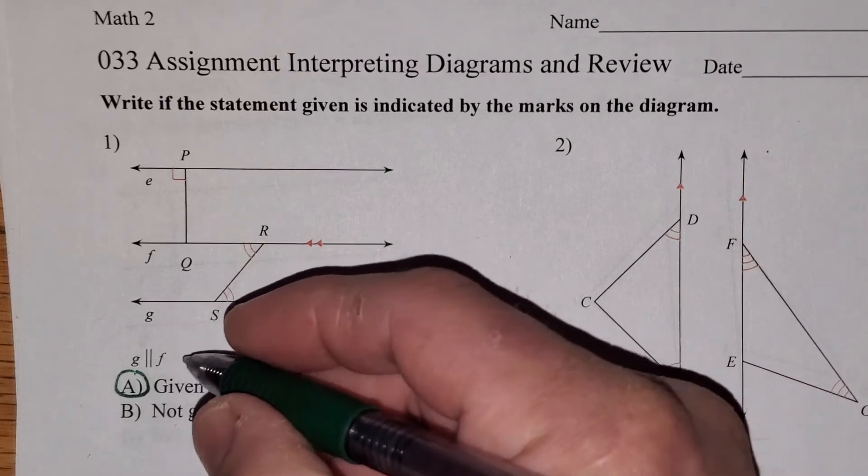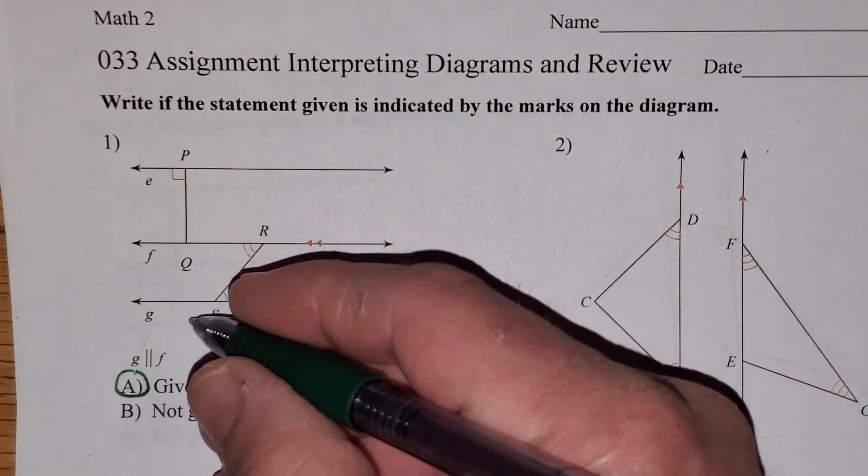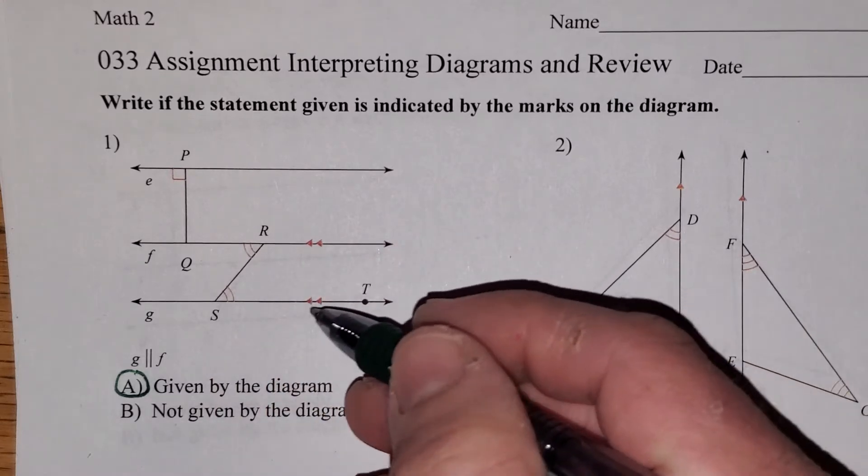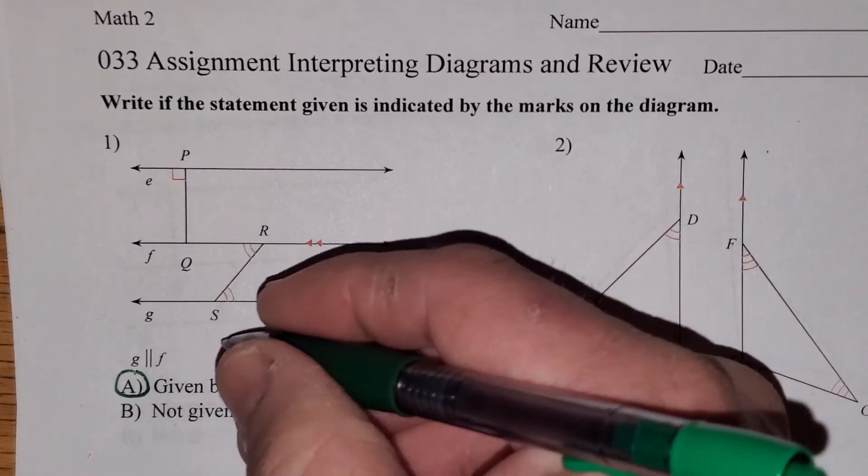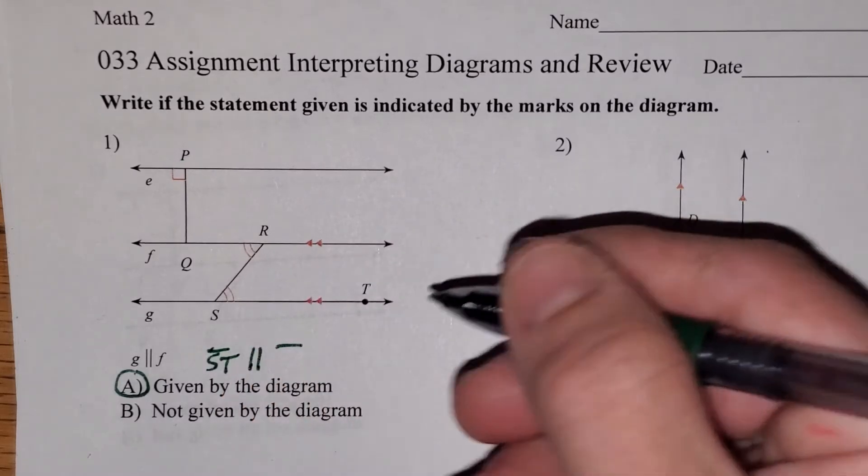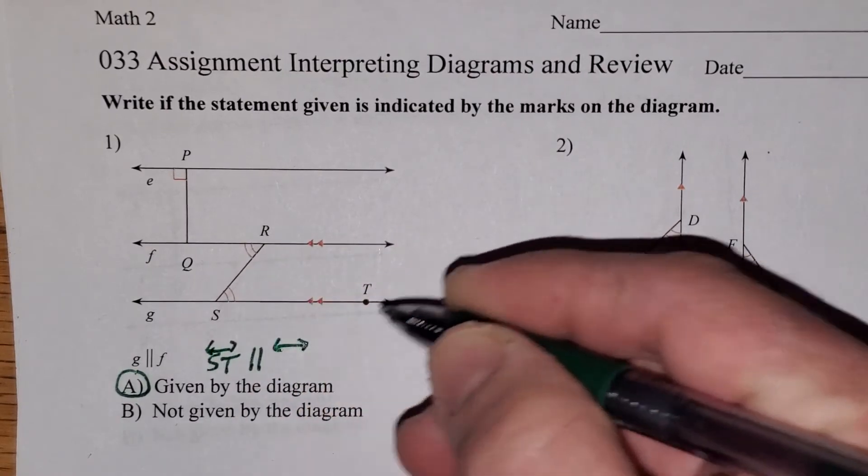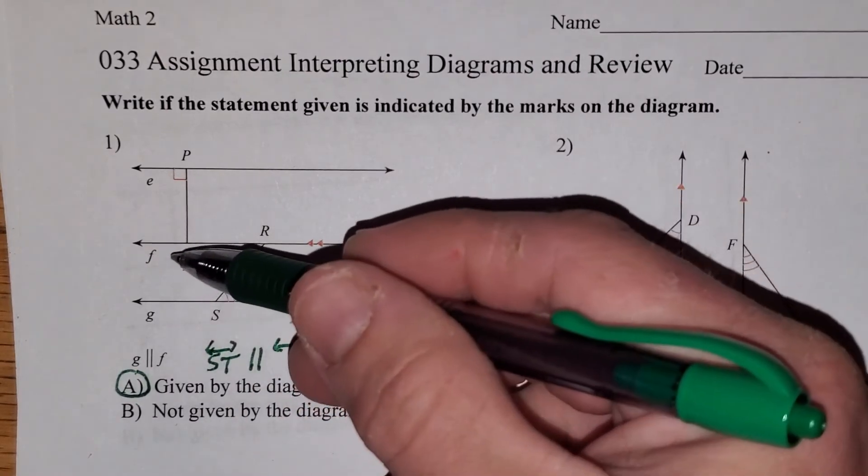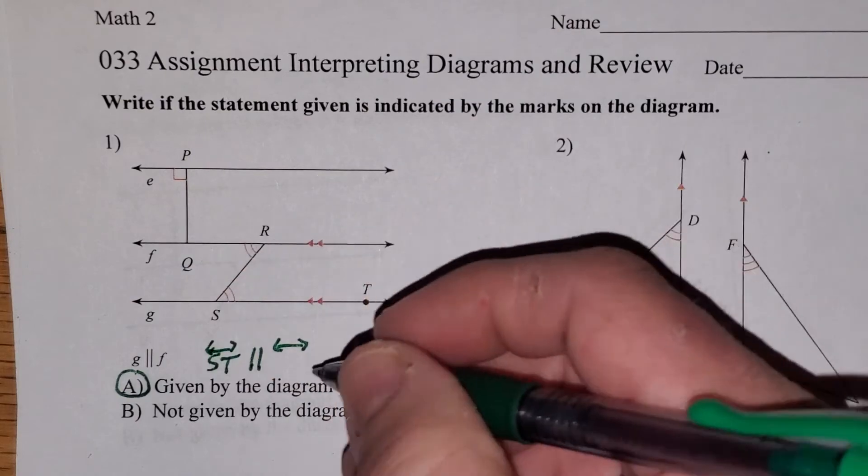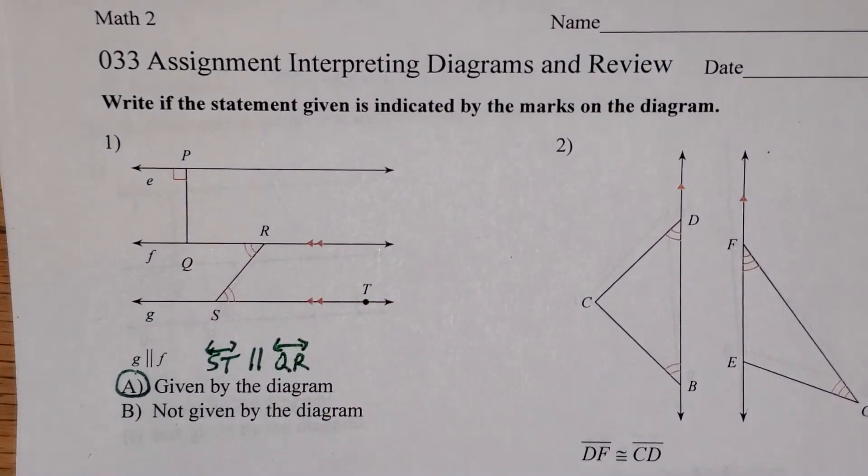I do want to point out that another way of writing this statement would have been that instead of line G, we could have called that line ST, or TS, is parallel to line, and I should have arrows on the end of those bars. We could have called line F instead line QR. Now, I do want to go through the other things that we could safely assume on this diagram.